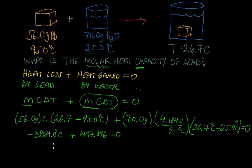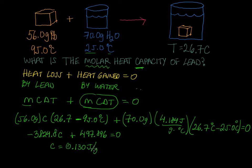Solving for C — subtract 497.896 from each side and divide — we get a positive value of 0.130 joules per gram per degree Celsius.